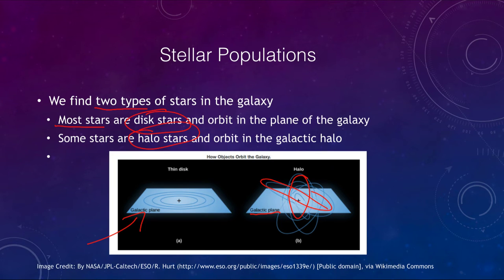Halo stars sometimes follow very eccentric orbits — very squashed orbits — quite different from the stars we see in the galactic plane. And we're going to see that this can tell us something about the early history of our galaxy.